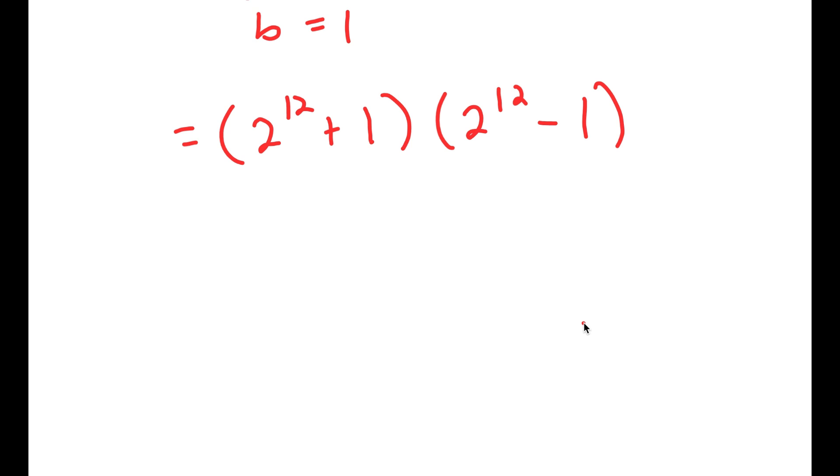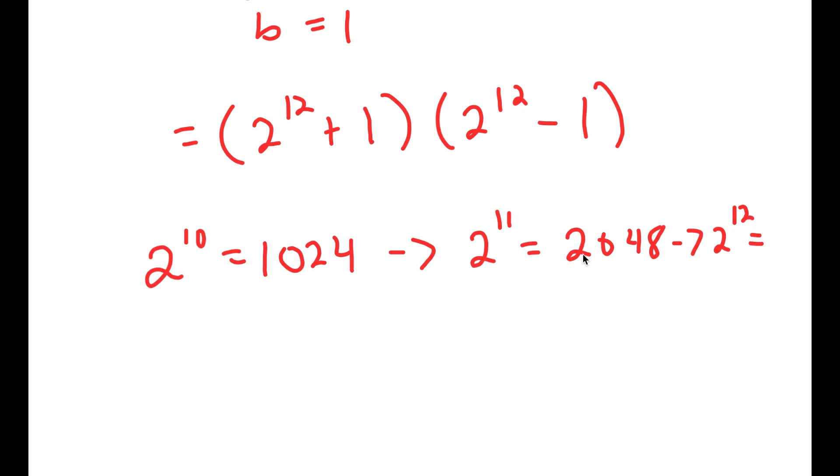Now, from here we need to find the value of 2 to the power of 12. Well, 2 to the power of 10 is equal to 1,024. So this means that 2 to the power of 11 is equal to double of 1,024, which is 2,048. And 2 to the power of 12 is equal to double of 2,048, which is 4,096.